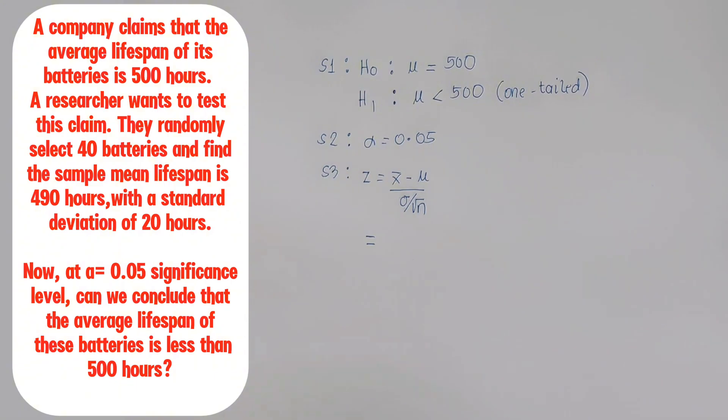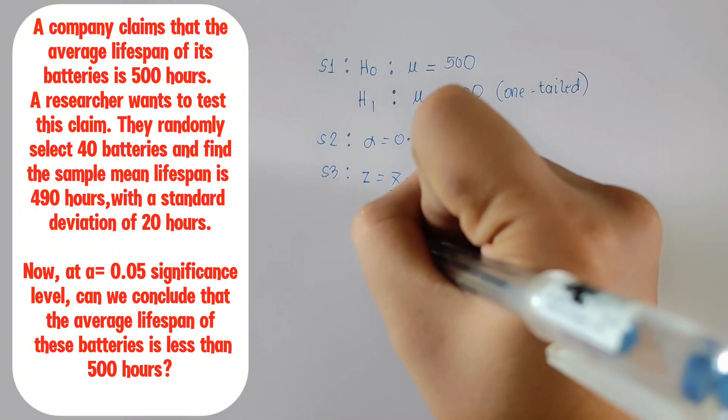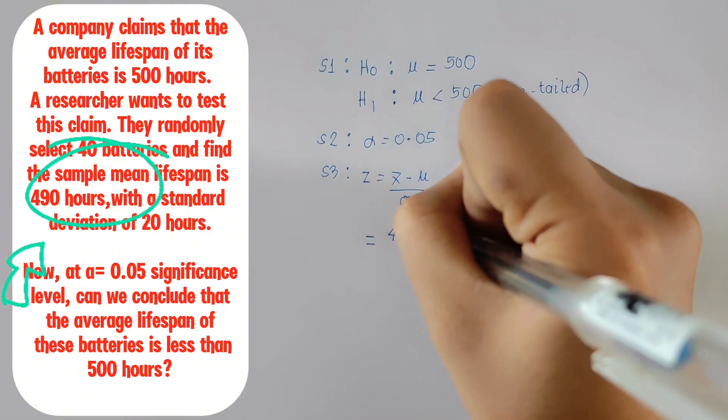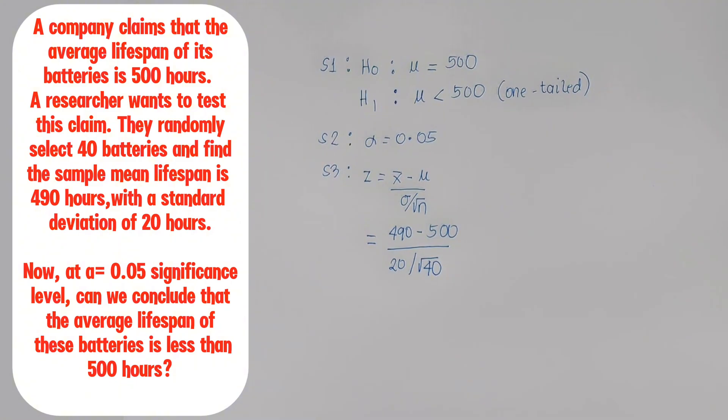Now, let's substitute the values. Our sample mean is 490. The population mean is 500. Standard deviation is 20. The sample size is 40.